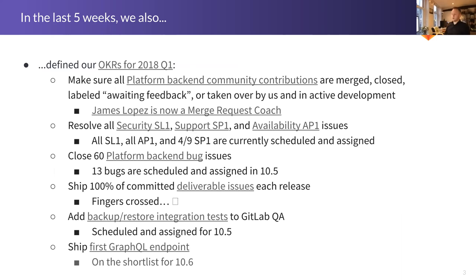For 10.5, the release we are working on right now, we have 13 of these issues scheduled. This may make it sound like we are way off schedule to hit 60 by the end of the quarter — the quarter having three months means we need to schedule 20 on average per month. We are a little bit below that right now, but that is expected because we also expect to grow in team size over this quarter. So while in 10.5 you might see 13 bugs, in 10.6 you might see 20, and then in 10.7 you may see the remaining 27 as the team grows and we gain capacity. Under the goal to ship 100% of committed deliverable issues each release, we won't know how well we actually did until the end of the month. We are going to do a little retro to collect this data over the quarter to see how well we did on all of these OKRs.